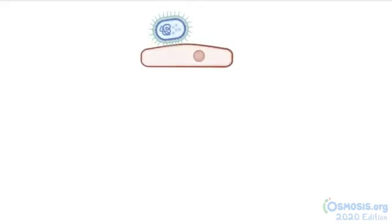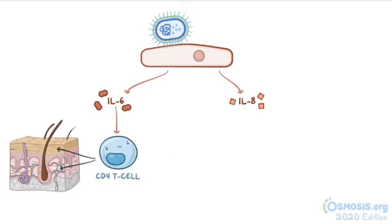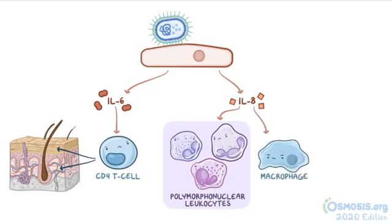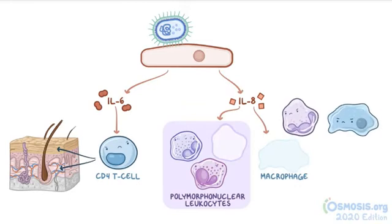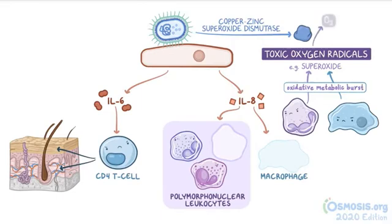After attachment, Haemophilus ducreyi makes epithelial cells secrete pro-inflammatory cytokines like IL-6 and IL-8. These molecules signal for white blood cell reinforcements. Specifically, IL-6 makes CD4 T-cells accumulate in the epidermis and dermis, while IL-8 leads to accumulation of polymorphonuclear leukocytes and macrophages. Neutrophils and macrophages try to kill invading bacteria by generating toxic oxygen radicals such as superoxide from oxidative metabolic bursts. Unfortunately, Haemophilus ducreyi produces an enzyme called copper-zinc superoxide dismutase, which converts superoxide radicals to oxygen and hydrogen peroxide, so it survives the attack.